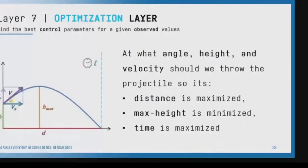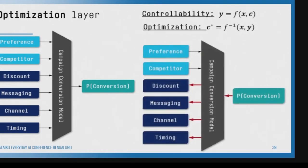The next layer is optimization. I want to maximize distance and height — what should be my angle and velocity? I want to maximize my conversion rate, and maximization works in a reverse way, like an inverse function. We are not saying given the input, predict the output. We are saying: I want to maximize conversion rate — tell me what to do with my control variables. The equation is c* as the inverse of x and y, where o is your observed variable (a constant), and you want to maximize y by finding the optimal control variable. Control system thinking must come, otherwise AI will remain a prediction system forever.